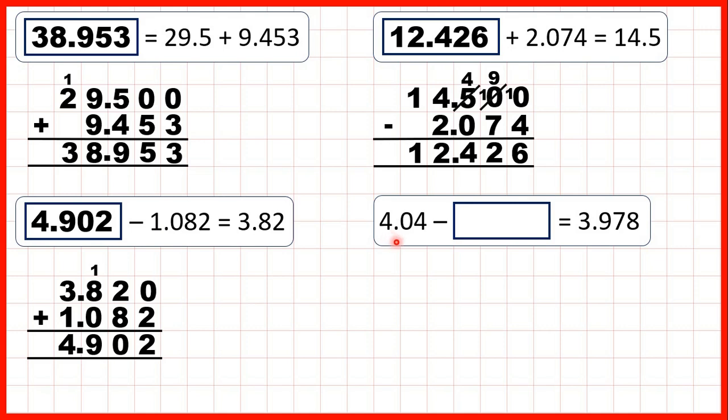Finally, 4.04 minus something equals 3.978. So this time, it's the second number in our subtraction, so the subtrahend that's missing. And when the subtrahend is missing, we still use subtraction to find our missing number. So we need to work out 4.04 minus 3.978, and that will give us our missing number.